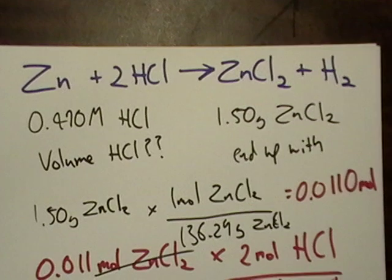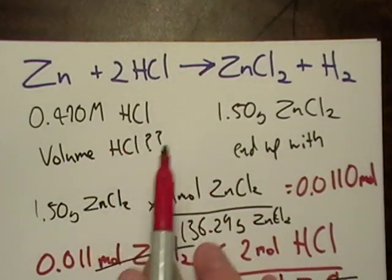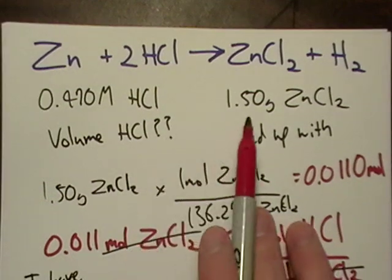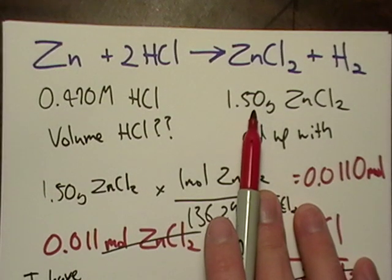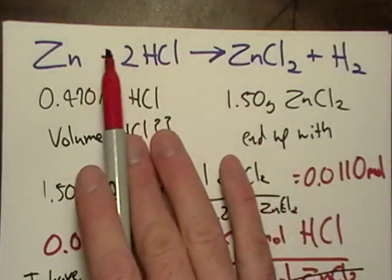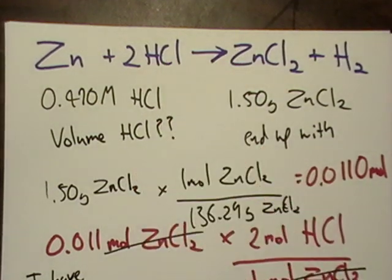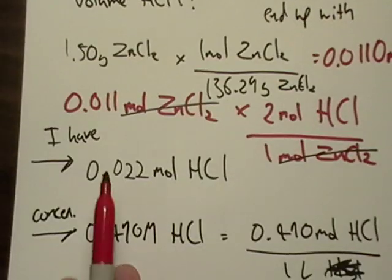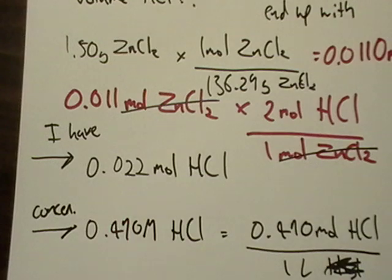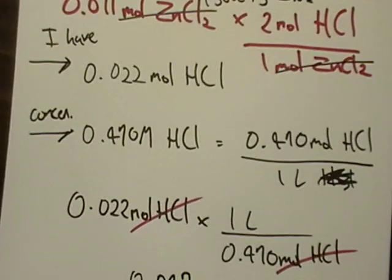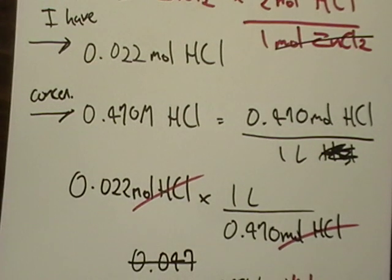Let's backtrack. We started with zinc chloride, converted it to moles. I had a stoichiometric ratio here that I used to get moles of hydrochloric acid. Once I found my molar amount of hydrochloric acid, we converted from moles to volume using the molarity of the acid. That's an example of solution stoichiometry.